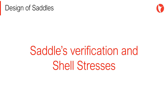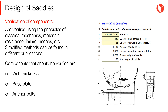Once the configuration and dimensions of these elements have been determined, it is necessary to verify the stress levels induced by the design loads. These elements are verified using the principles of classical mechanics, material resistance, failure theories, etc. Simplified methods can be found in different publications, adapted to the configuration of this equipment. Components that should be verified are: the web thickness, the base plate, and the anchor bolts.